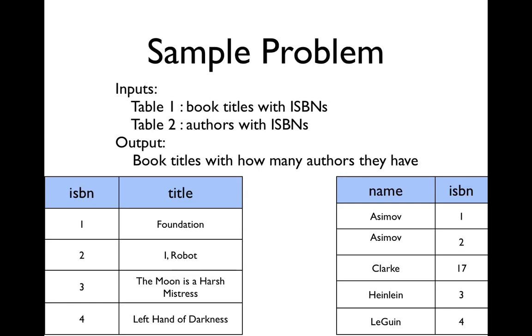So here's a problem that you might solve using relational algebra. You've got two inputs. There's a table giving the titles of books and their ISBN numbers. Then there's another table giving the ISBN numbers of books and an author who worked on them. And what we want to output is a table that says for each book title, how many authors worked on it.